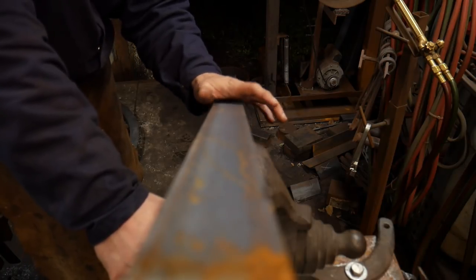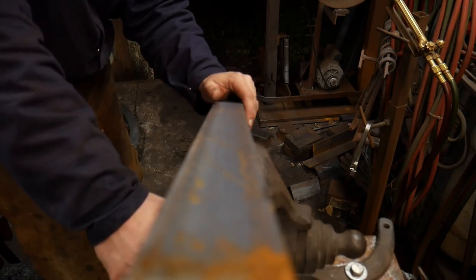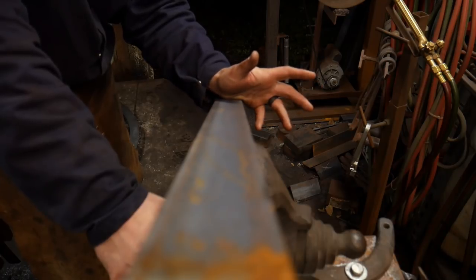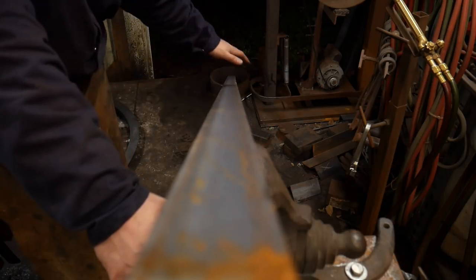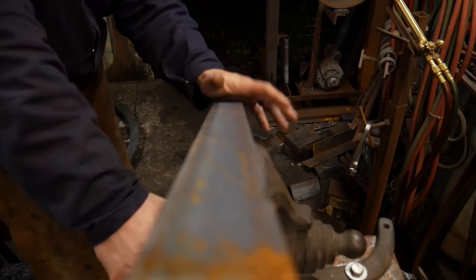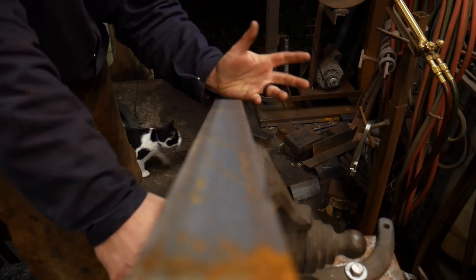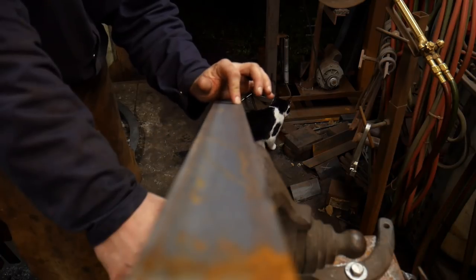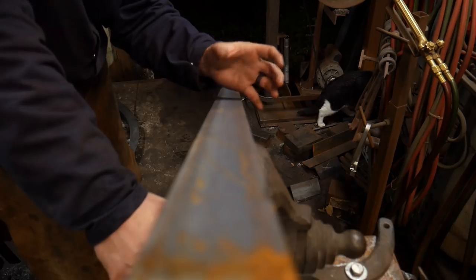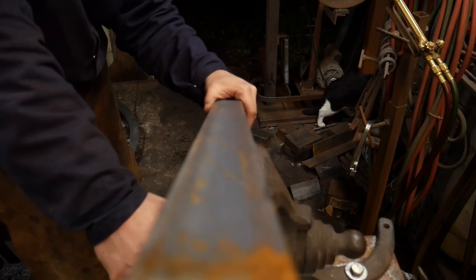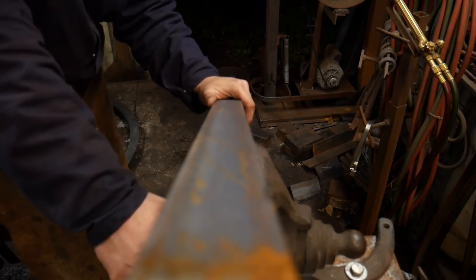But what ends up happening is these come in longer lengths, say a 20 foot or a 24 foot length of material. So it's a big giant length of material. And what happens? They take and they fork truck this stuff. So there's a big bundle of it. It's all together. It's all bundled up, supposed to be to try to help, you know, minimize any sort of buckling or bending that may occur.